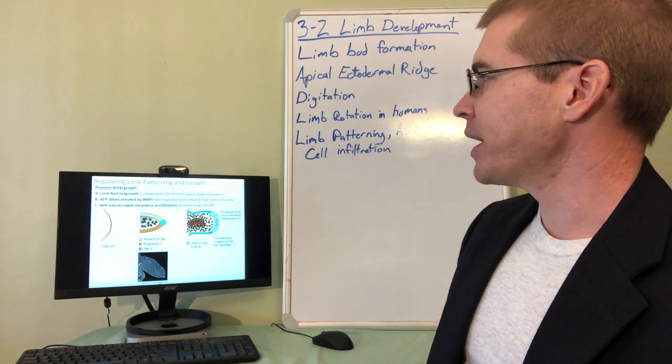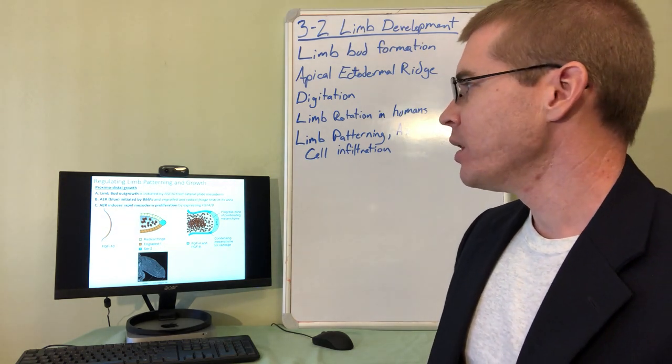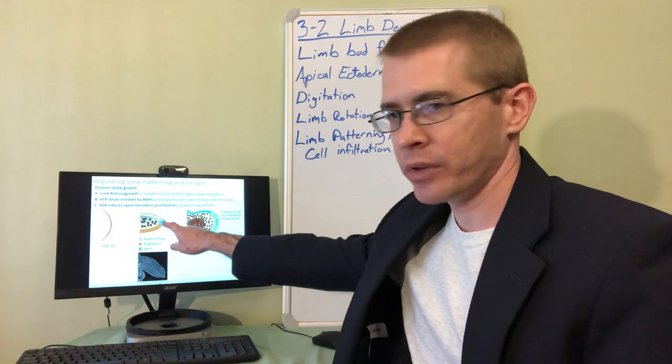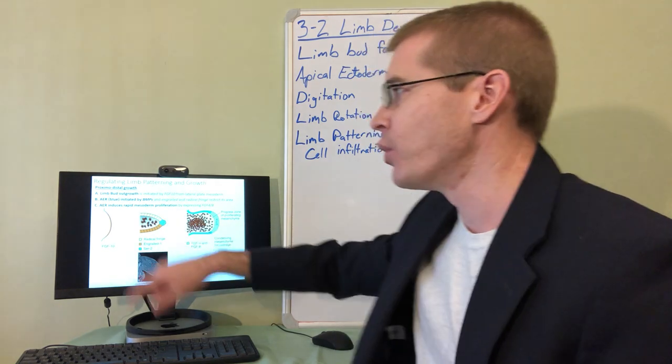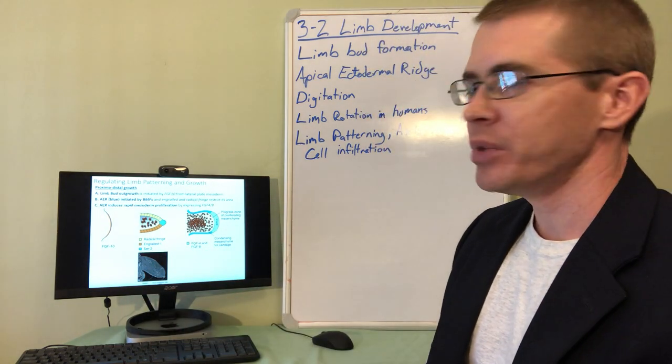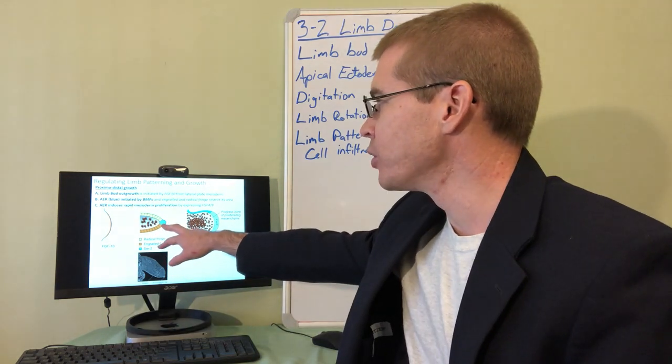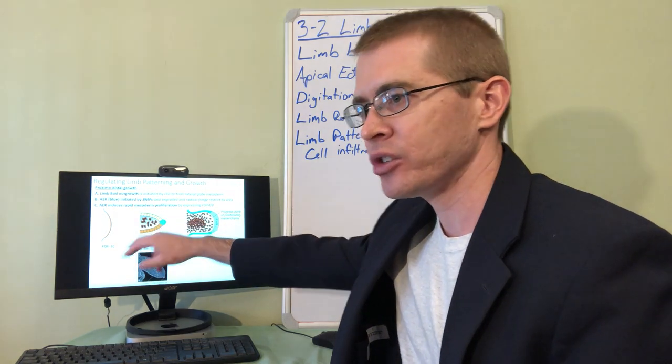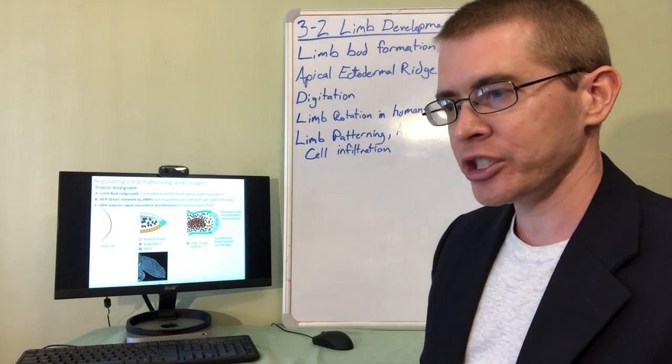So after that initiation of the outgrowth of the lateral plate mesoderm, then the apical ectodermal ridge, the small ridge on the end of the limb bud is formed by different BMP morphogens. Those BMP morphogens forming this AER. So the AER then starts sending out other growth factors, FGF4 and FGF8.